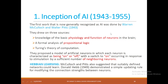The first work that is now generally recognized as AI was done by Warren McCulloch and Walter Pitts. They drew on three sources: knowledge of basic physiology and function of neurons, a formal analysis of propositional logic, and Turing's theory of computation.